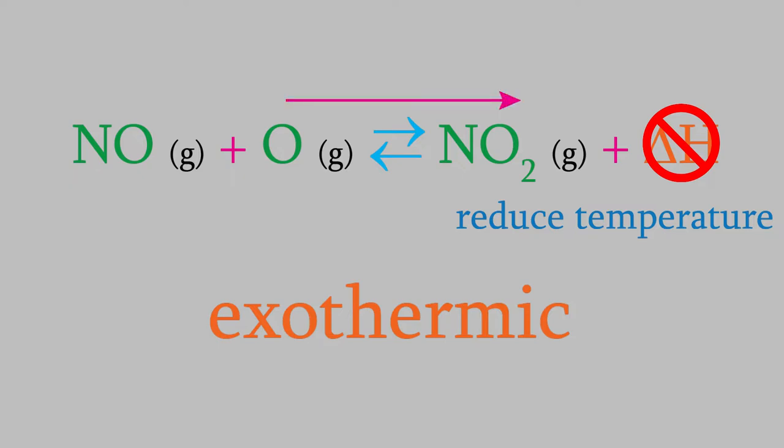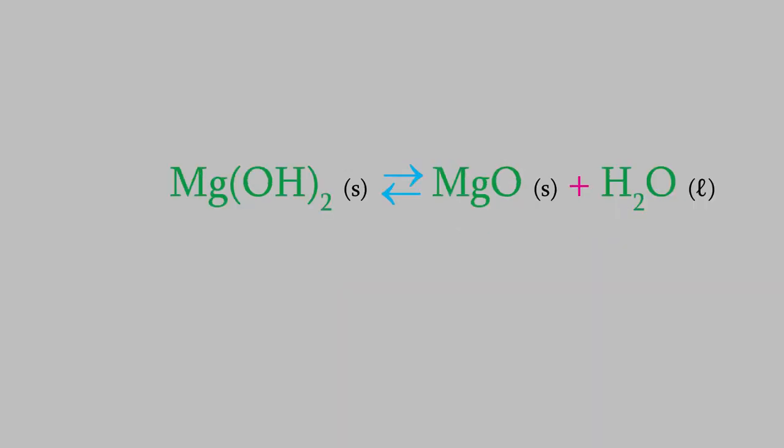Let's try another example. Suppose we have this reaction. This one is an endothermic reaction, which means the reaction absorbs heat. So, heat goes into the reaction, not out of it, and the delta H, then, belongs on the reactant side.